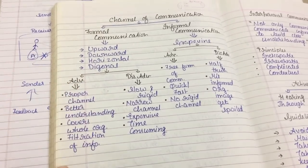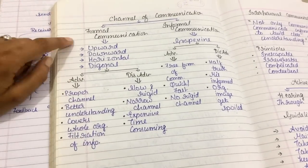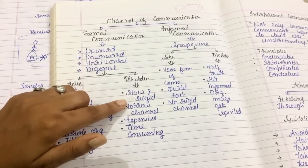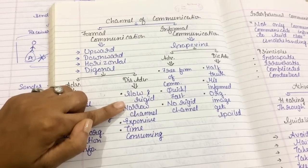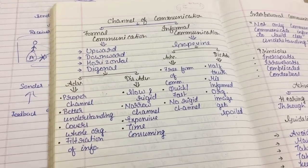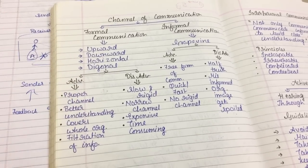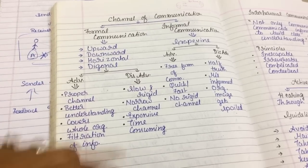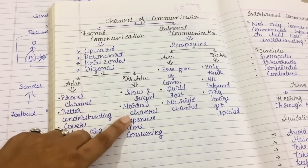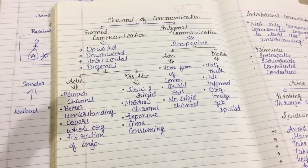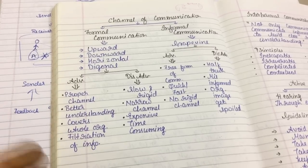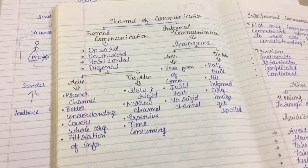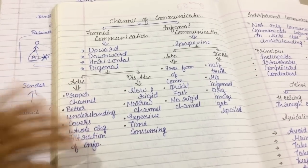Fourth, filtration of information — information is filtered according to needs. Top level managers make strategies for the whole organization and communicate them to various departments, and each department only gets the information needed for that particular department. The disadvantages are: it is slow and rigid — it is time-consuming. Top level managers tell departmental heads, who tell supervisors, who then communicate to workers. It is also a narrow channel and it is expensive since it is mostly written communication.